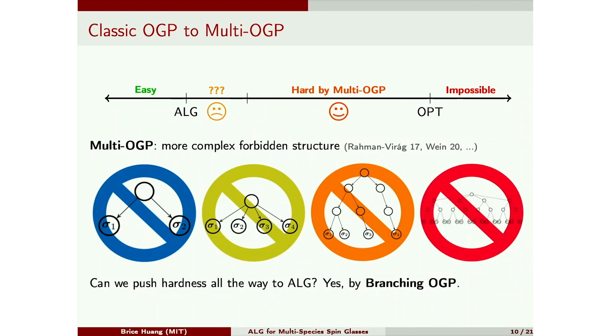And the message of this talk is, yes, we can, using a new version of the multi-OGP, which we call the branching OGP. So this uses a new forbidden structure, which represents a sort of hierarchical type of clustering.